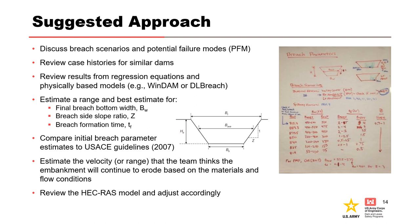The objective is to obtain reasonable breach estimates given modeled flow conditions in HEC-RAS. This is an important risk category activity — it is not a formal elicitation process. The risk driver potential failure modes should be reviewed to determine which breach scenarios will be evaluated. The team should make use of multiple methods — case histories, regression equations, and physically-based models when appropriate — to estimate final breach bottom width, breach side slope ratio, and breach formation time. The parameters obtained should then be compared against USACE 2007 guidelines, if appropriate. Lastly, the team should estimate the velocity or range that the embankment will continue to erode based on judgment considering the materials and flow conditions.